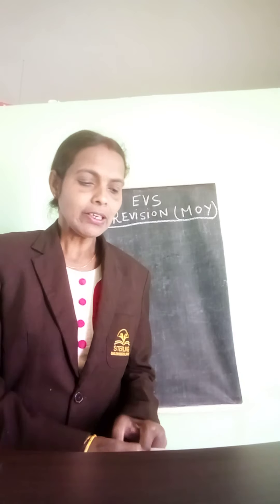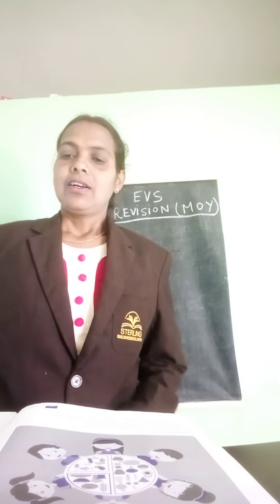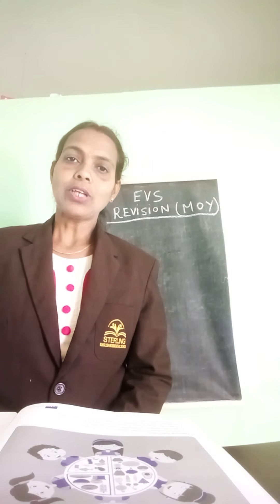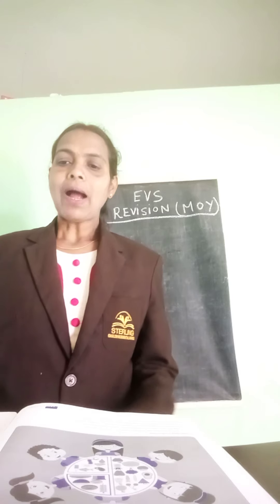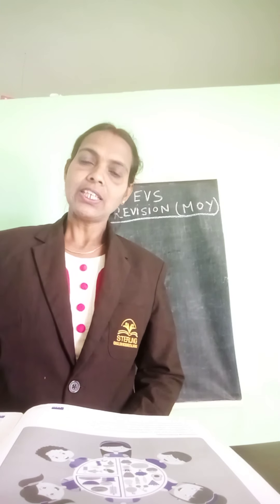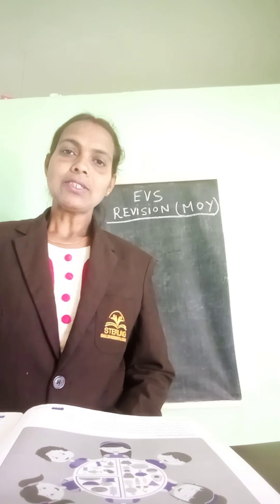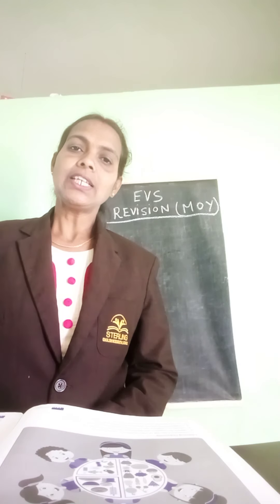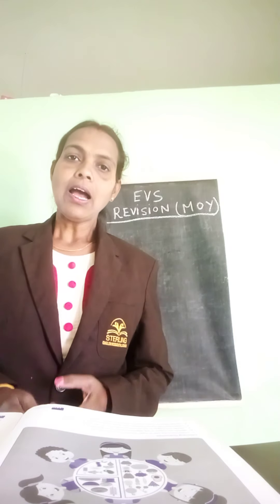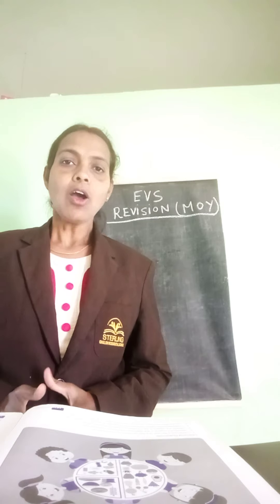First, worksheet 1: what is the definition of organ? The body parts which perform a specific function in our body is called an organ. Examples: heart, lungs, brain, stomach — these are organs.